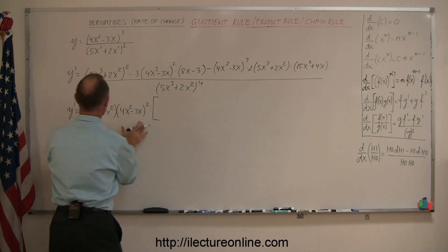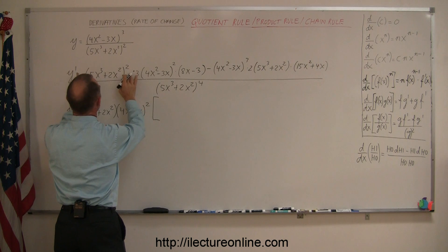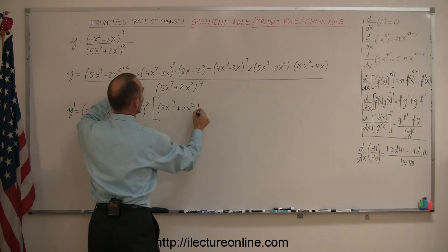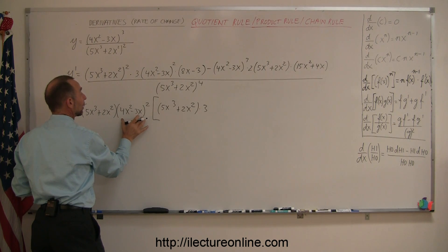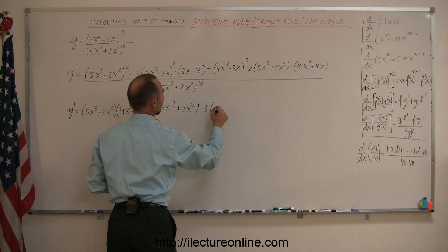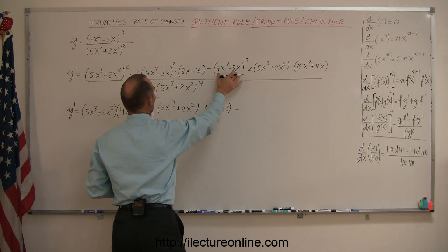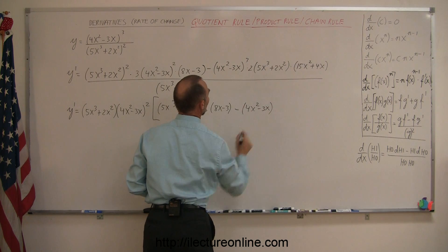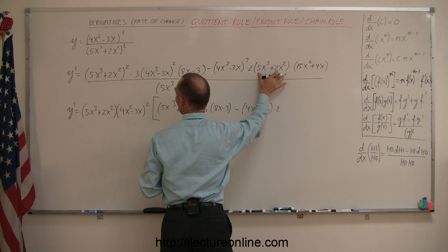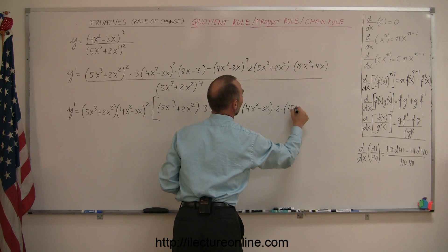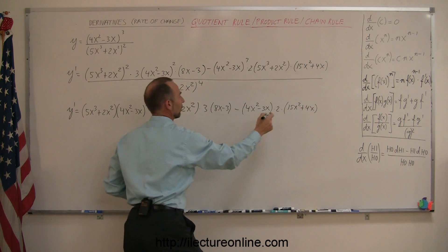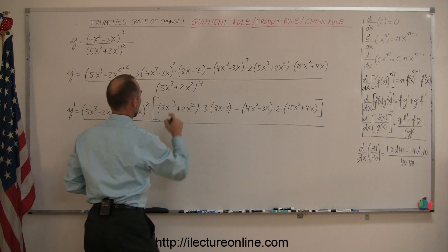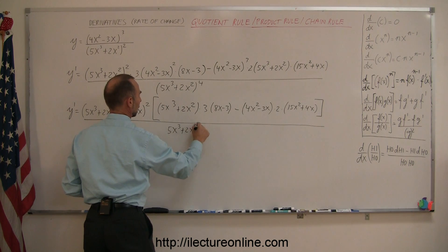So what do we have left after factoring? We have one 5x cubed plus 2x squared to the first power remaining. We still have the 3, and the 4x squared minus 3x squared quantity is factored out, so we still have the 8x minus 3. Minus: we have one 4x squared minus 3x to the first power remaining. We still have the 2, and times 15x squared plus 4x. The whole thing is divided by 5x cubed plus 2x squared to the fourth power.